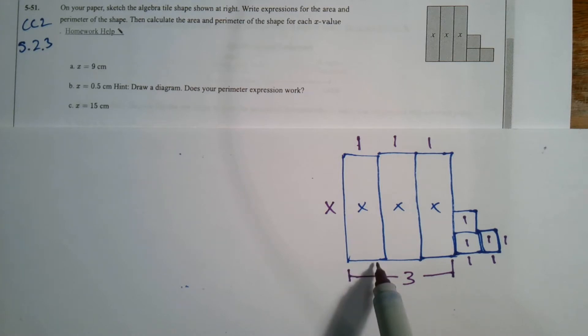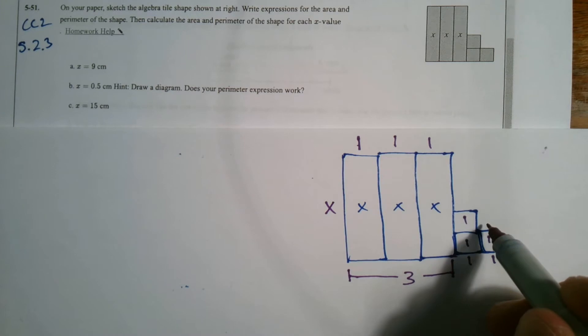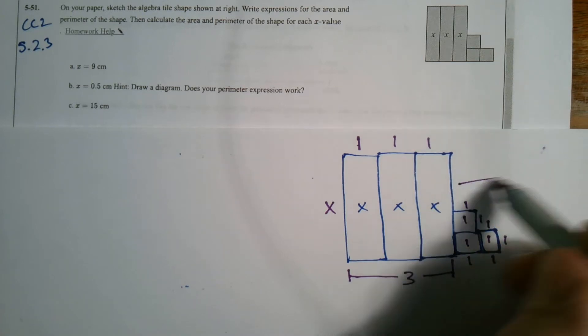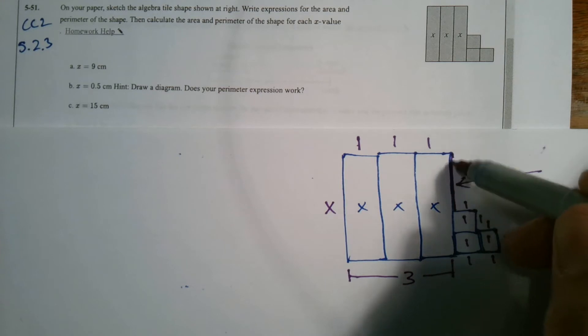Because each of the edges of an X tile are one. And then the edges on the unit tile are one as well. So that's length one, that's length one, this is length one.